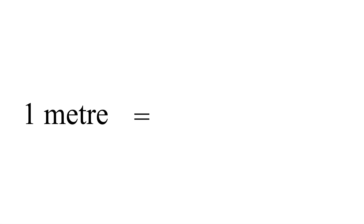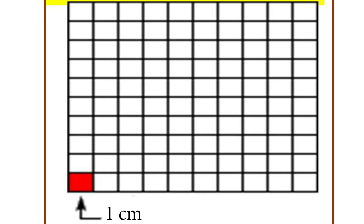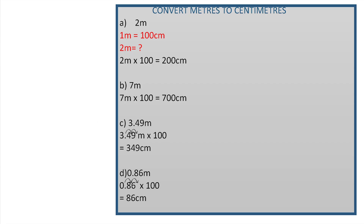Today we are going to study the relationship between a metre and centimetre. In 1 metre there are 100 centimetres. This means that 1 metre is divided into 100 equal parts of 1 centimetre each. Practice time, let's convert the following from metres to centimetres.